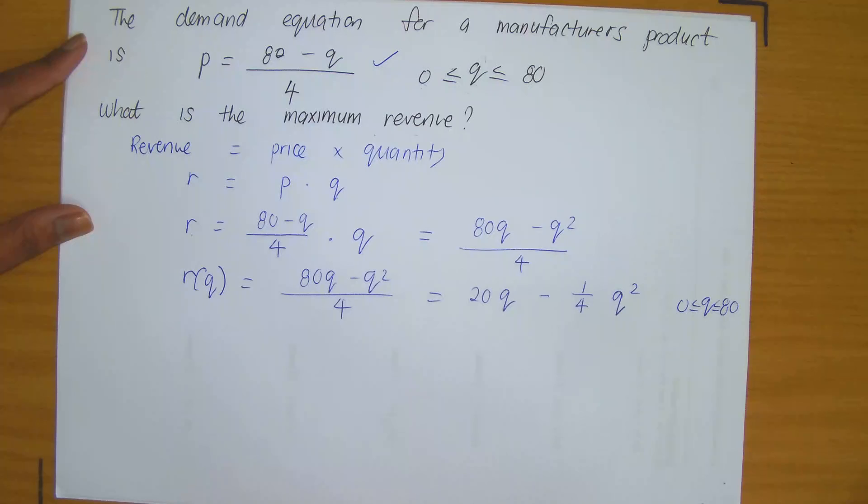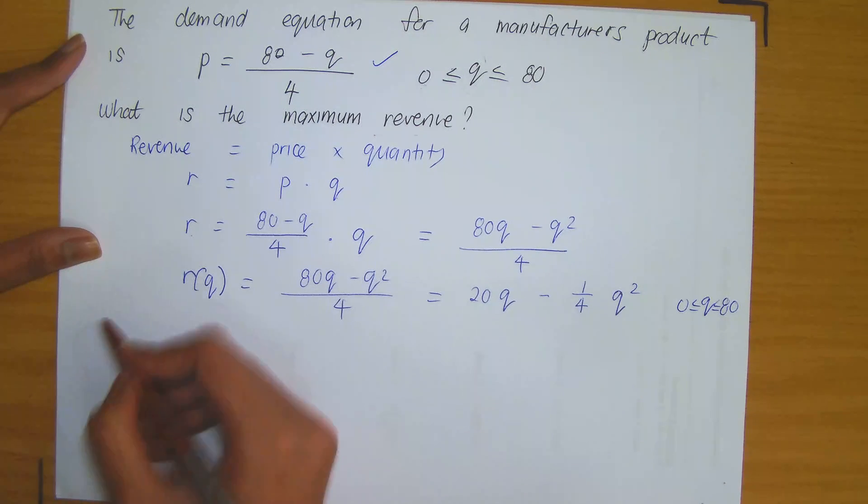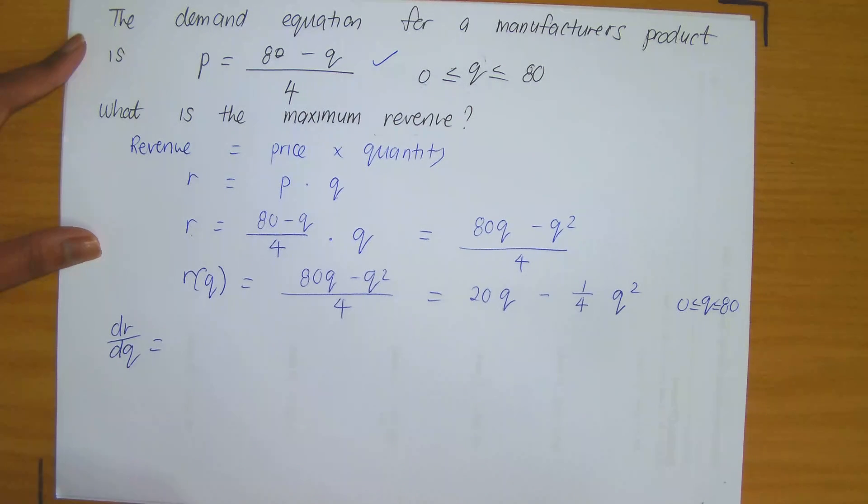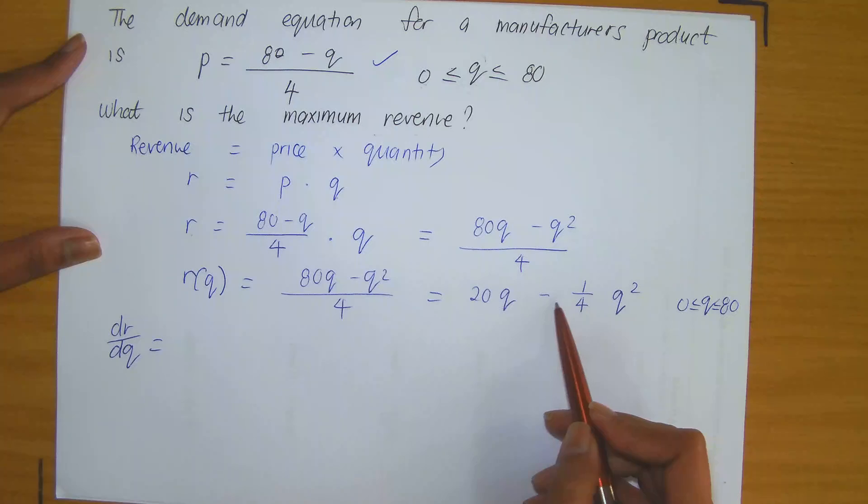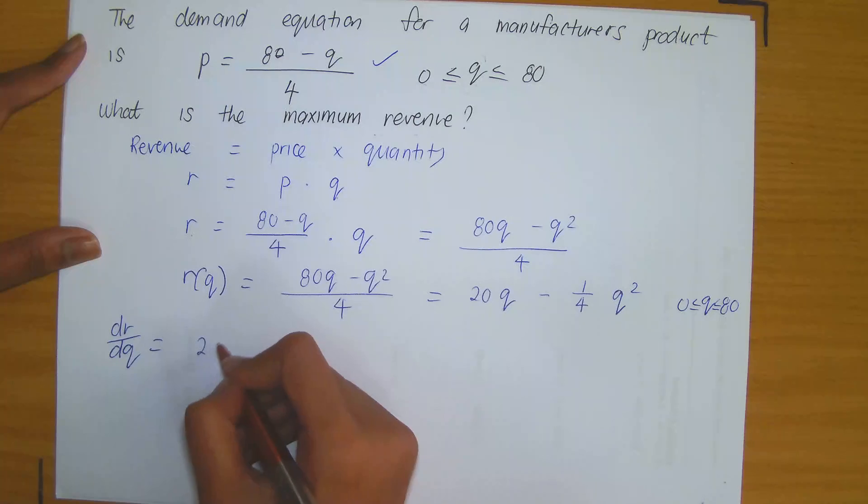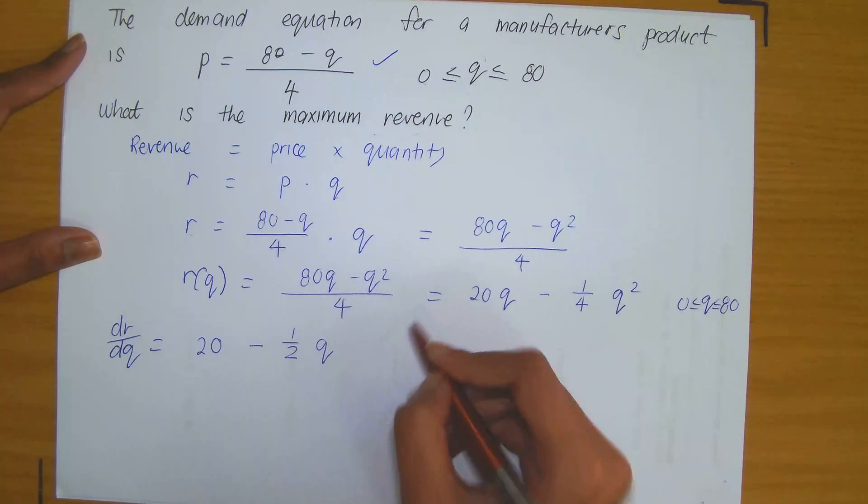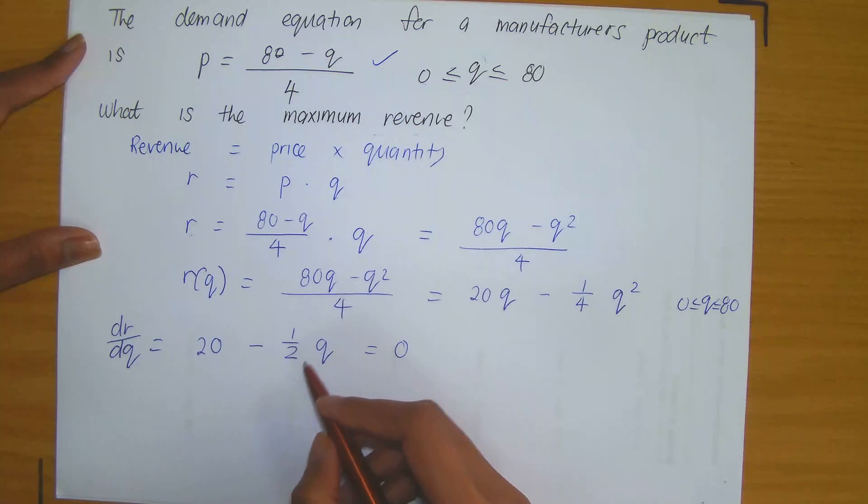Step four. Find the critical values and test them. So we now need to compute the derivative of R with respect to Q in order to find the critical values. So what is the derivative of 20Q minus a quarter Q squared? That's just going to, derivative with respect to Q, that is 20 minus a half Q.